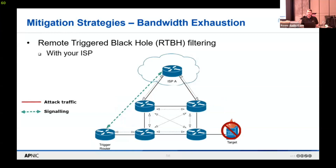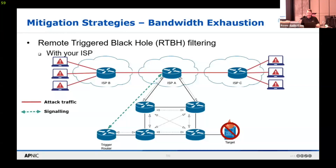If you take the same remote-triggered blackhole activity but do the triggering to your internet provider and upstream connections, the traffic doesn't actually come down to your network at all. Your target is still offline, but you save bandwidth to your external edge routers, which can keep your entire network more accessible. When traffic coming from botnets and many servers reaches your upstream connection, that's where the traffic gets dropped before it comes down to your network.